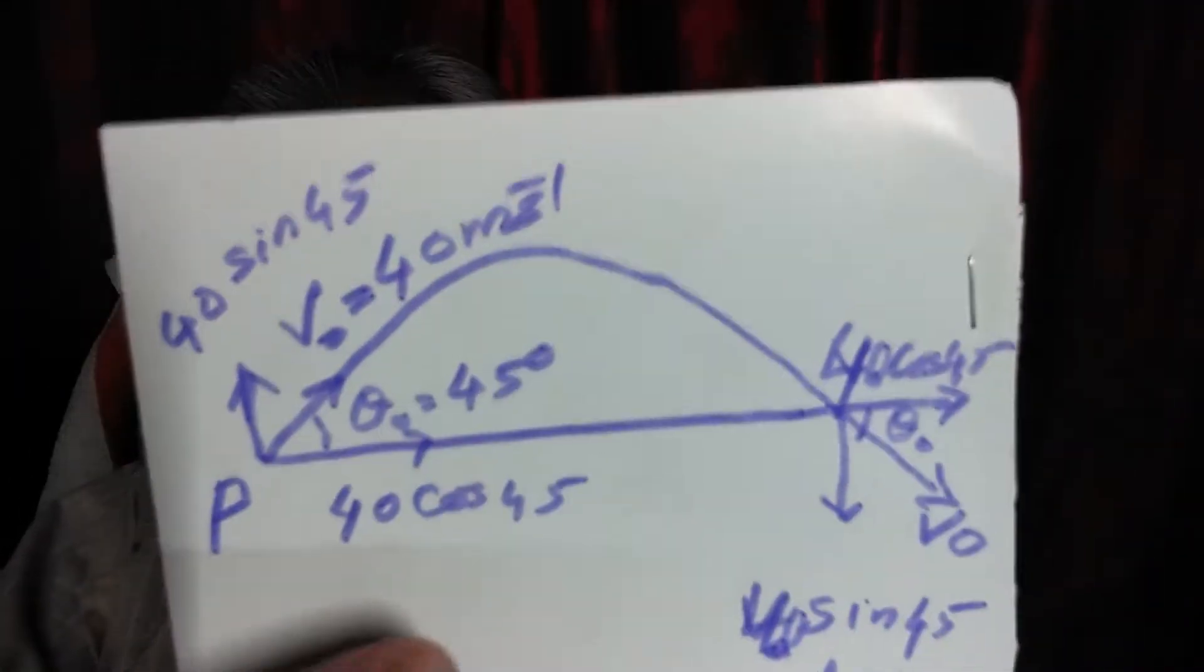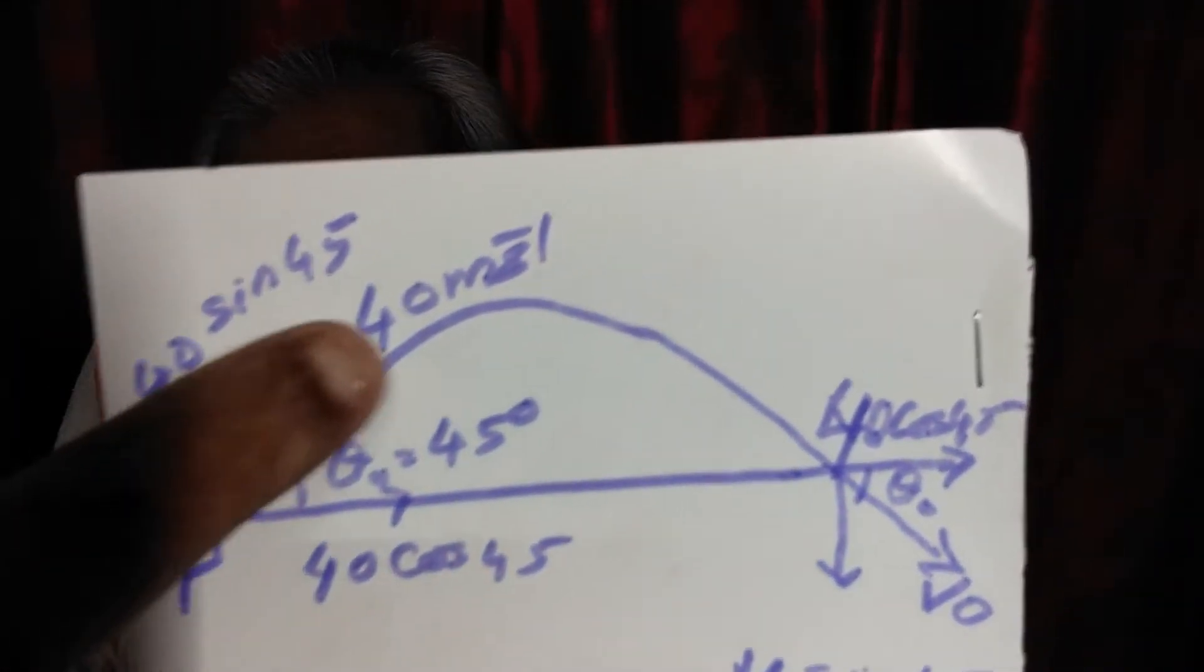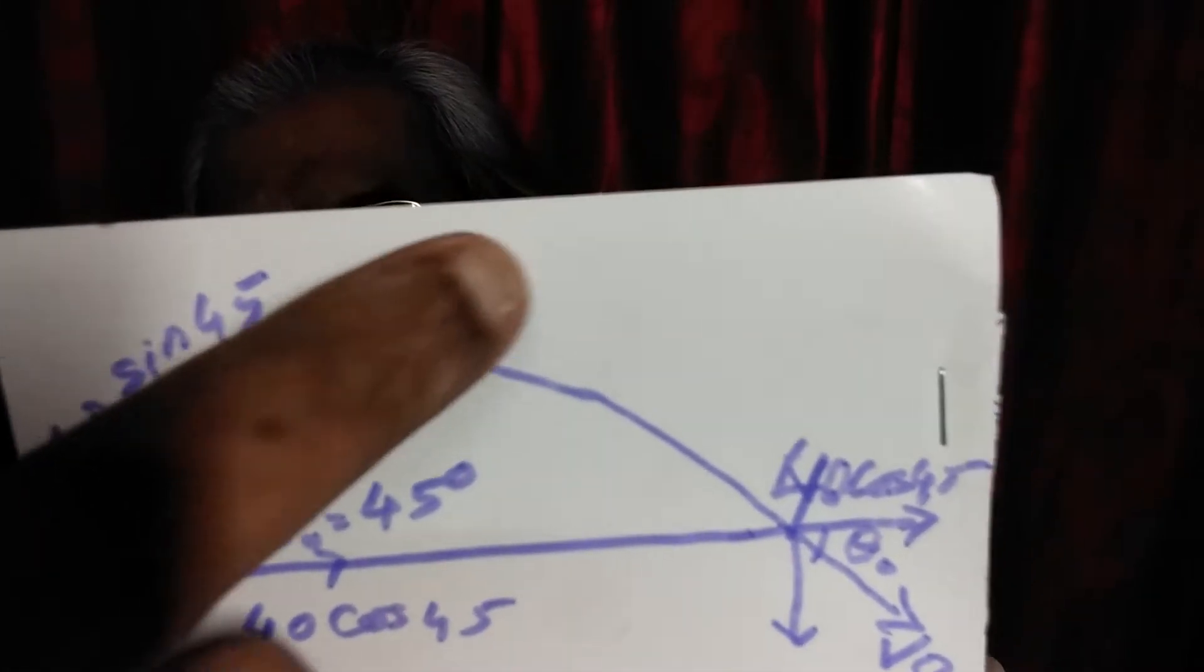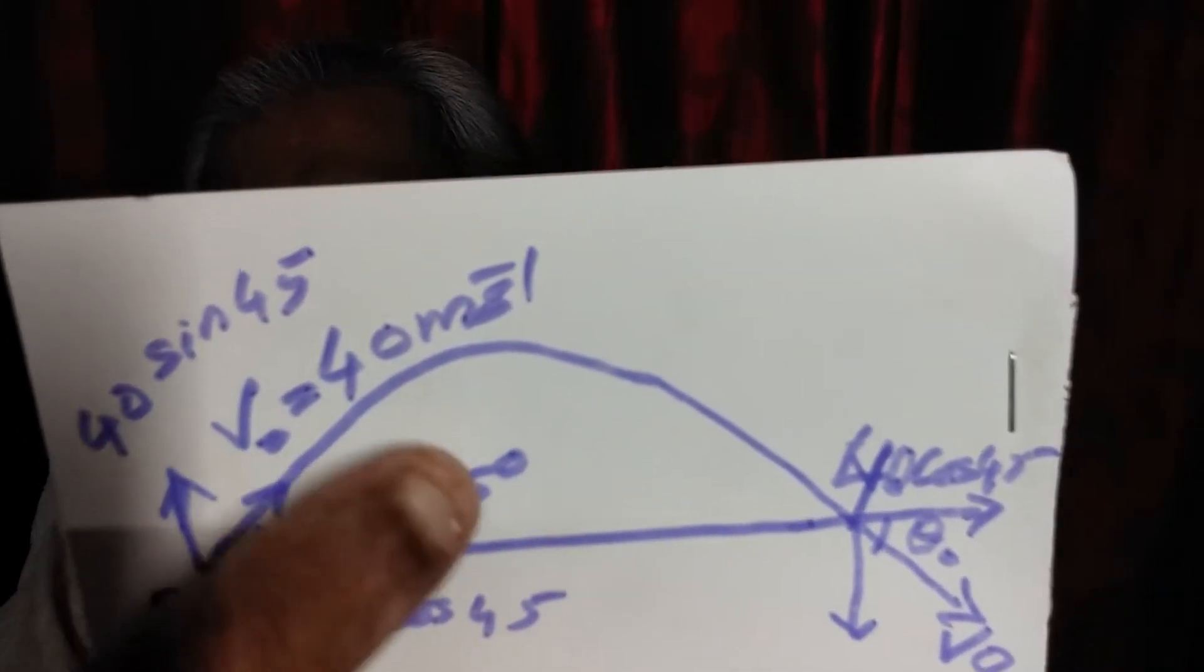What is the angular momentum of the ball with respect to him, just at the moment the ball hits the ground? What is the angular momentum of the ball at 40 meter per second, theta-0 is 45 degrees.